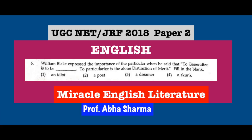Question number 6: William Blake expressed the importance of the particular when he said, 'To generalize is to be ___; to particularize is the alone distinction of merit.' Fill in the blank. The correct answer is 'an idiot.' William Blake said that if you are general, like any other person on this planet, you are an idiot. If you are different from others, that is particular. General knowledge is passed by idiots only.